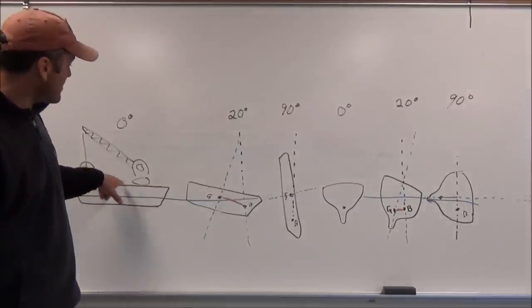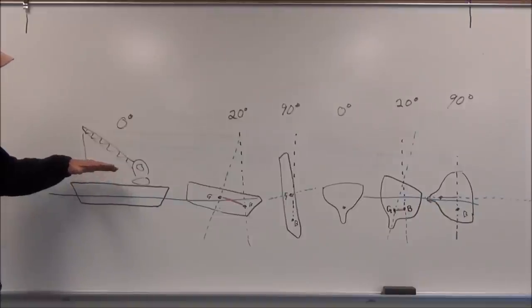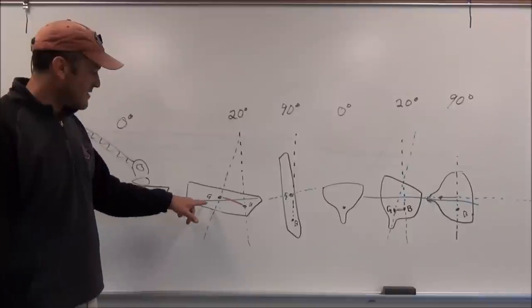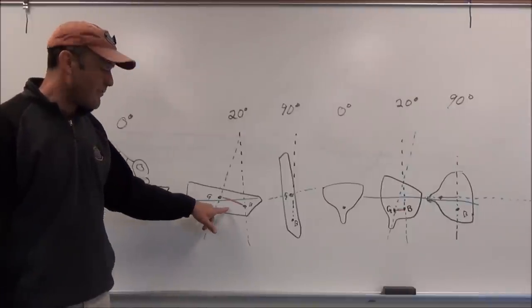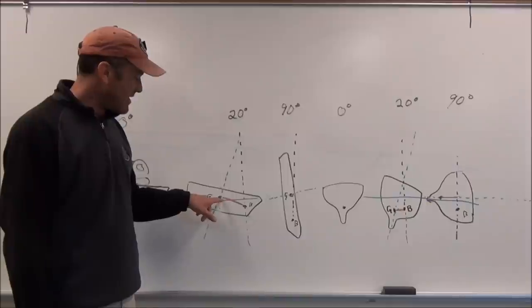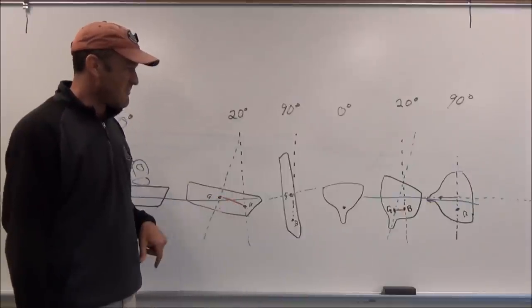So when we go from zero degrees of heeling on the barge, zero degrees, then we go to 20 degrees, right away the center of buoyancy shifts way over to the one end of the barge. So that gives us a really large righting arm.